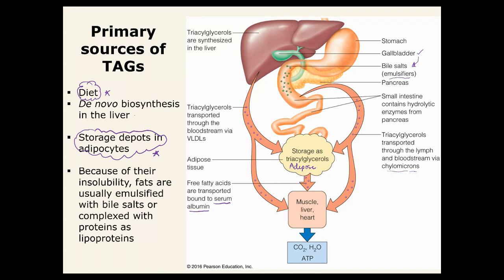The third source is fat synthesized in the liver, which can be transported through the bloodstream and be stored or go into the muscle for energy, depending on what's going on with our carbohydrate intake. We're going to go through it in parts.